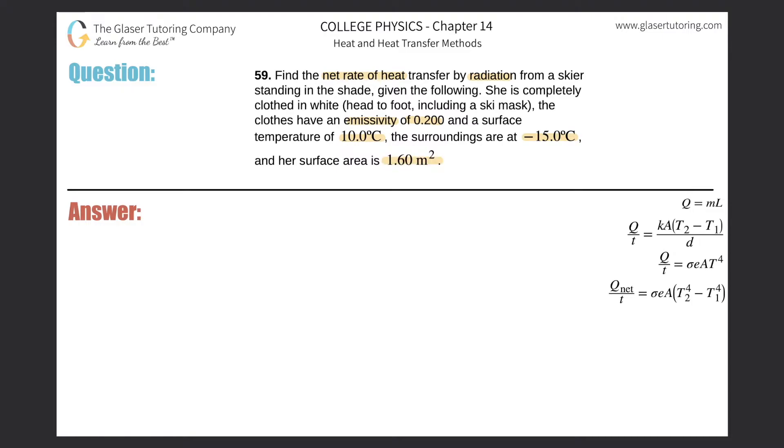Anytime we're talking about radiation, we're talking about these two formulas. If you're asked to find the net rate of heat, you better be given two temperatures. If you've got to find the net, you've got to be given two temperatures, and that's basically what we're going to do. We're going to look to use that formula.